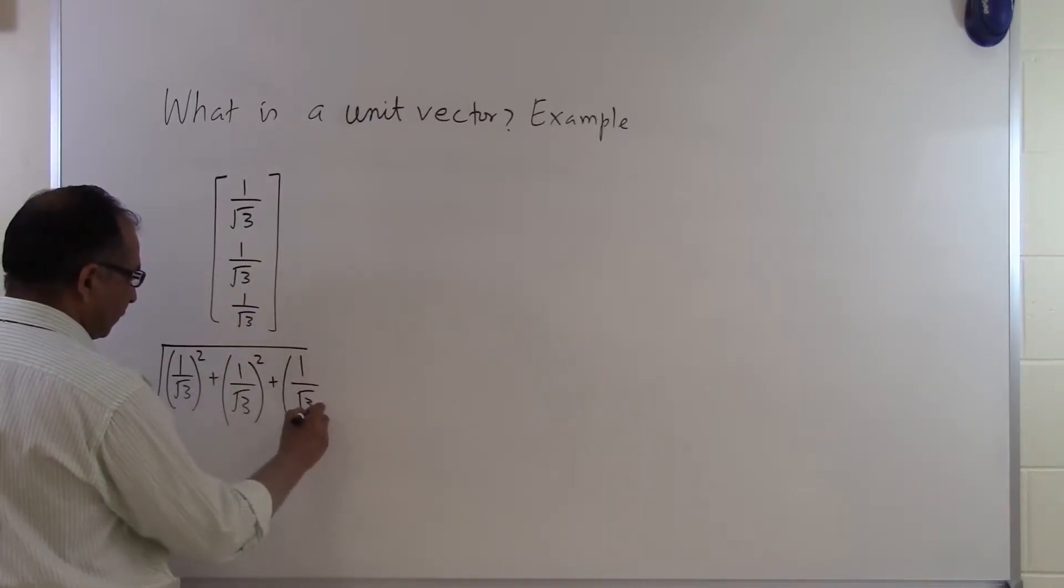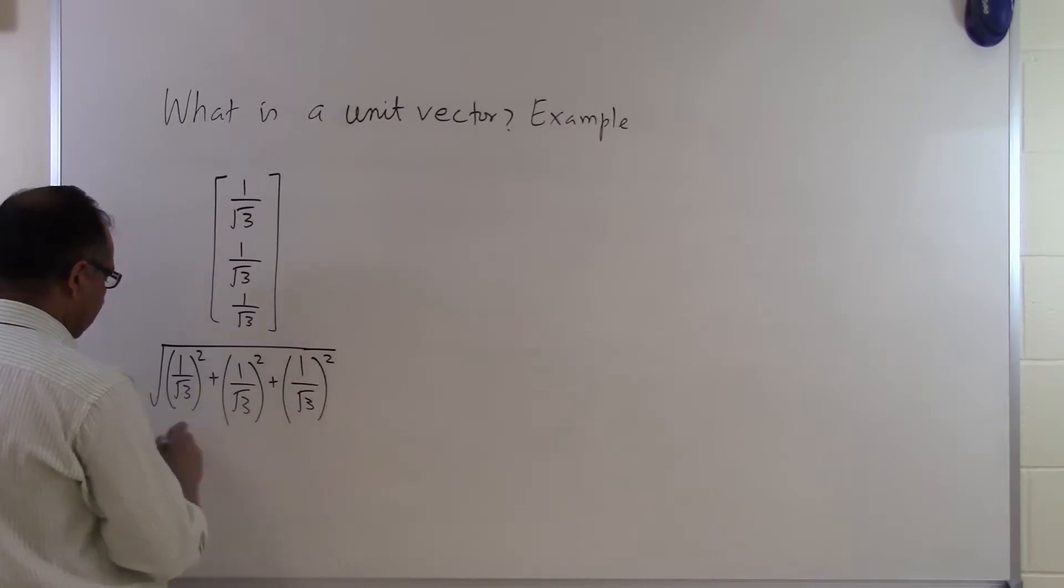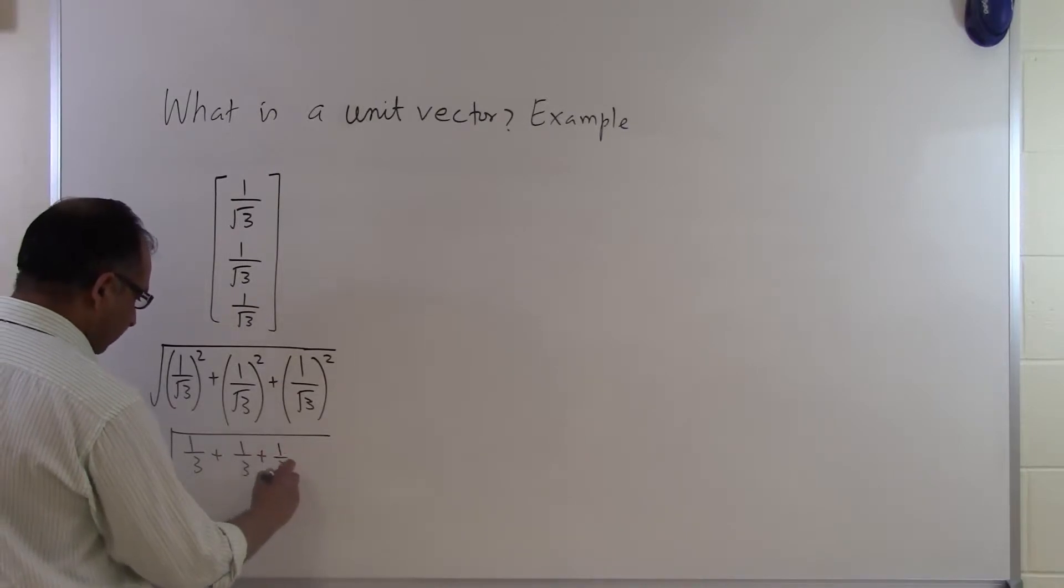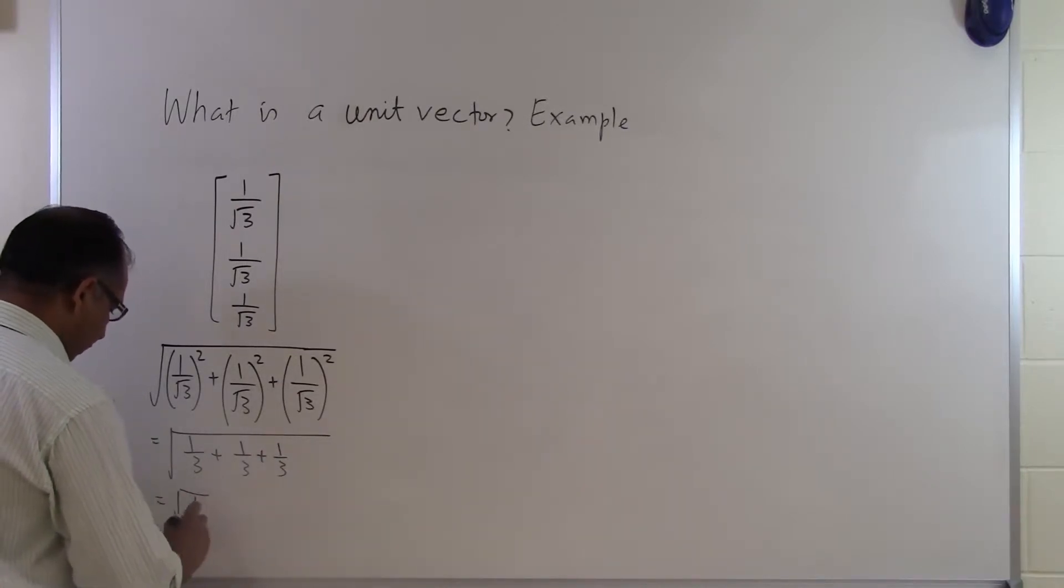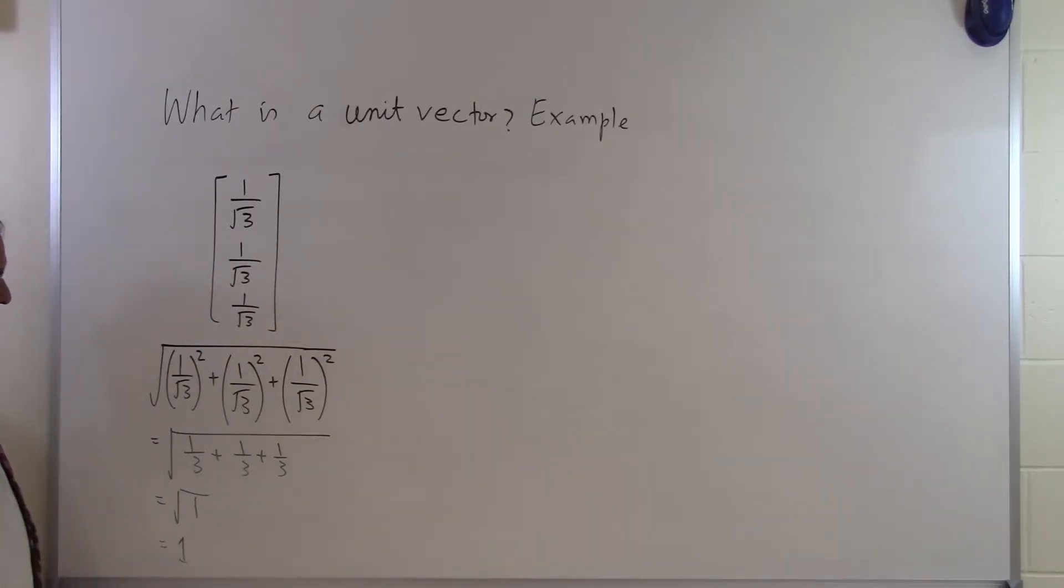The third one is 1 divided by square root of 3, I square it. So I get that. The square root of 1 by 3 plus 1 by 3 plus 1 by 3, the square root of 1, and that comes out to be 1. So that is a unit vector.